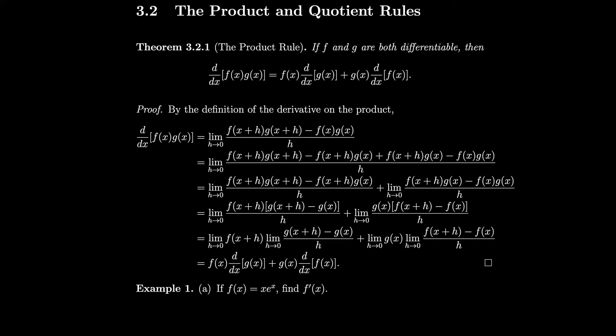Let's take a look at this proof. By the definition of the derivative, the derivative of a product is the limit of f(x+h)·g(x+h) minus f(x)·g(x), over h, as h goes to 0. Then we use a clever trick where we subtract f(x+h)·g(x) and add f(x+h)·g(x) — it's the same as adding 0.